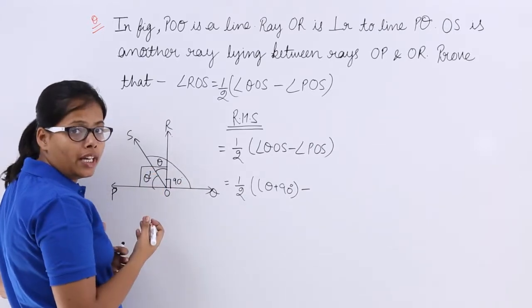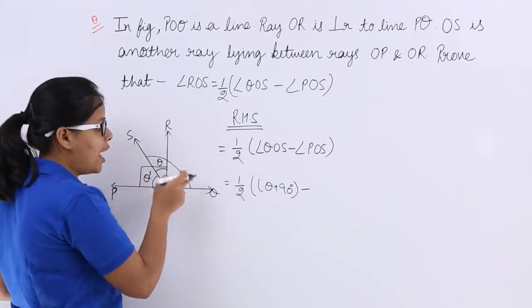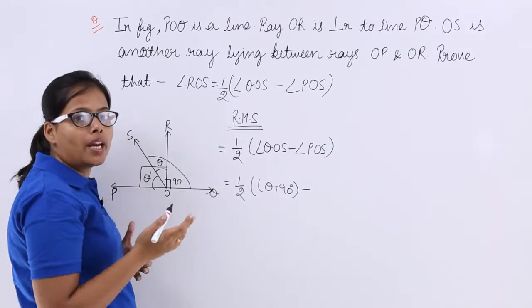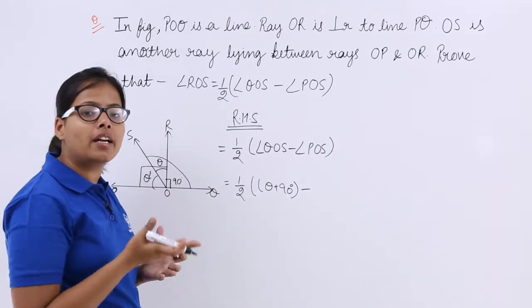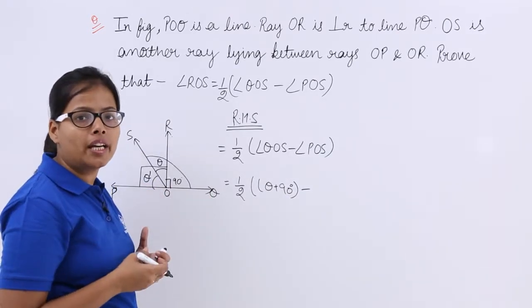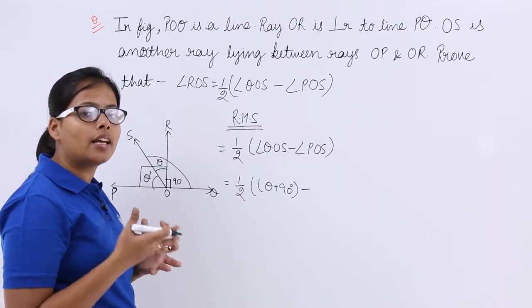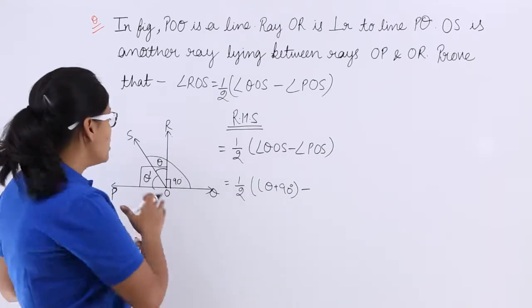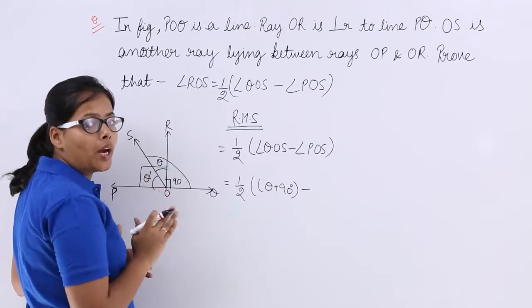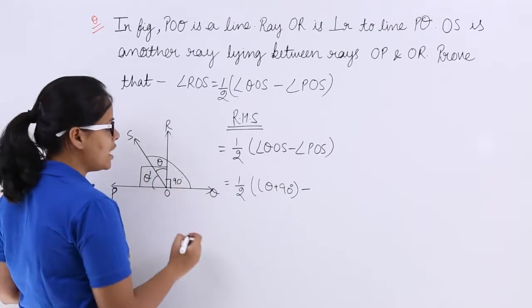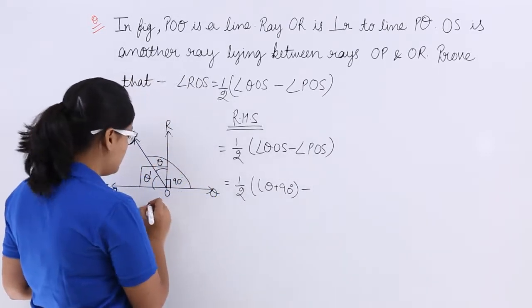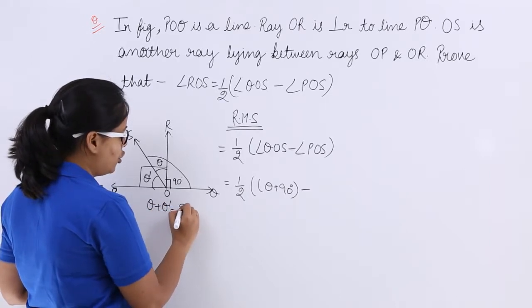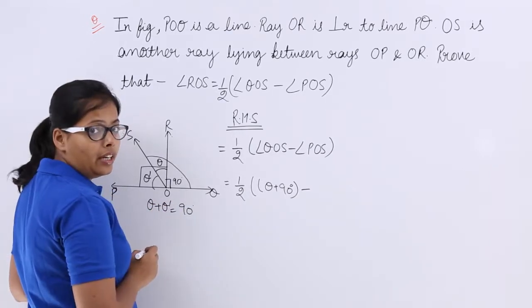This angle will also be 90 degree because this whole angle has to be 180 degree, because the angle subtended on a straight line is always 180 degree. I am repeating that again. Keep it in mind that this whole angle will be 180 degree.